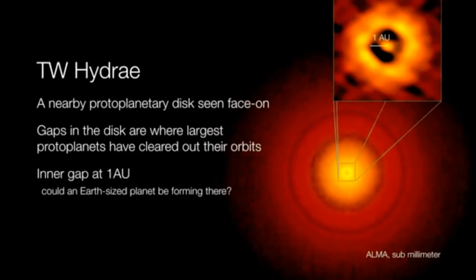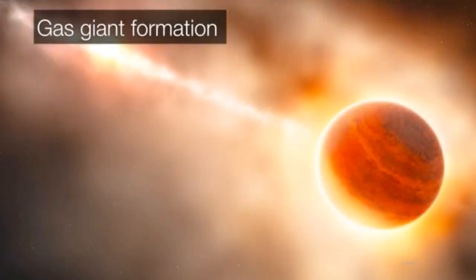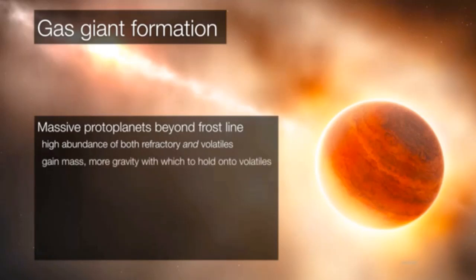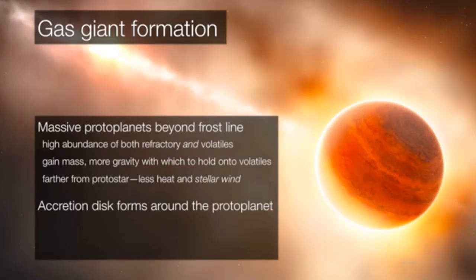Returning our attention to the gas giants, remember they too are forming out of the disk. They form well beyond the frost line where there is a high abundance of both refractory elements and volatiles, so they have everything. They gain mass by colliding with material in their orbits. They are farther from the protostar, so there's less heat, less stellar wind, and a greater abundance of these volatiles to begin with, evolving from inside the protoplanet's own accretion disk.